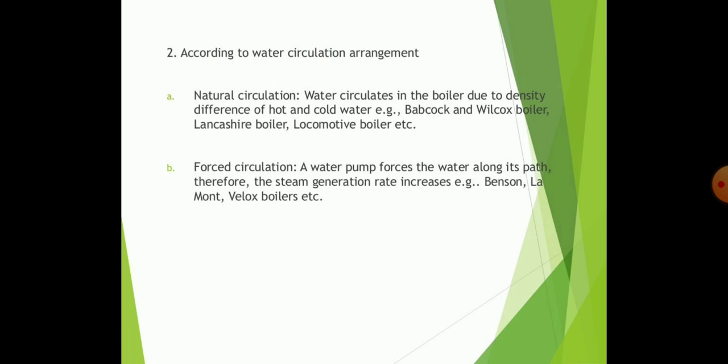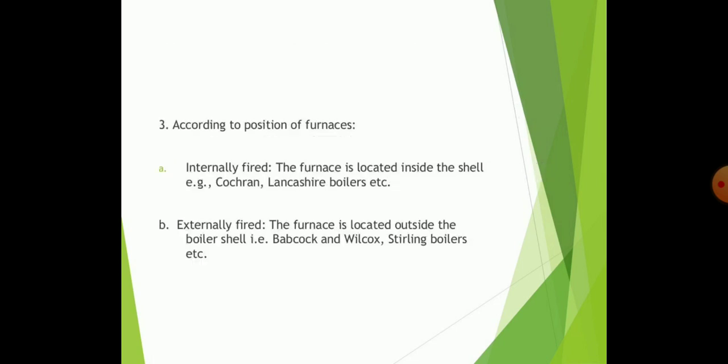These boilers are also classified according to water circulation arrangement. In natural circulation, water circulation in the boiler occurs due to density difference of hot and cold water. Babcock and Wilcox boilers are natural circulation boilers. In forced circulation, a water pump forces the water along its path. Therefore, the steam generation rate increases, as in Benson and Lamont boilers.